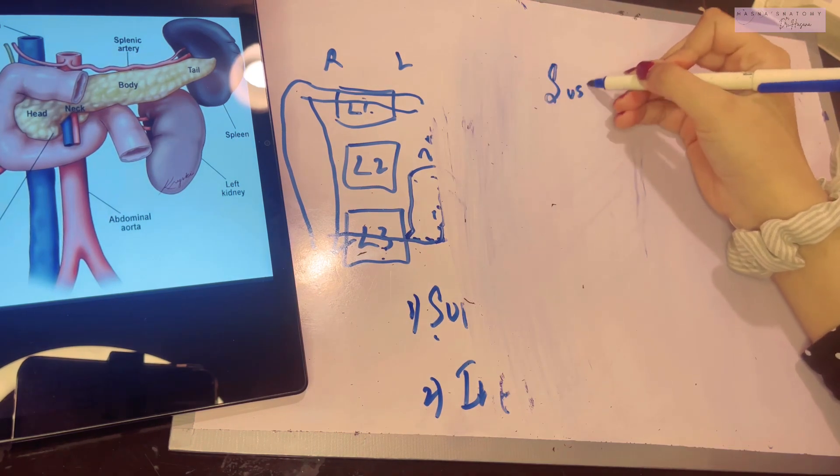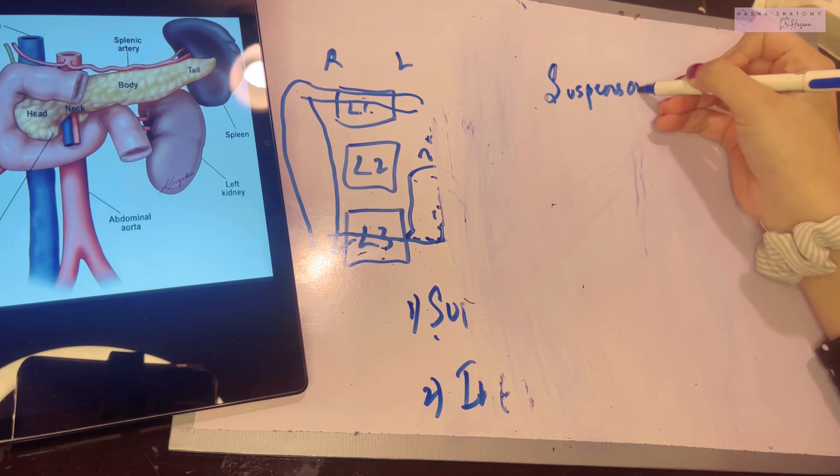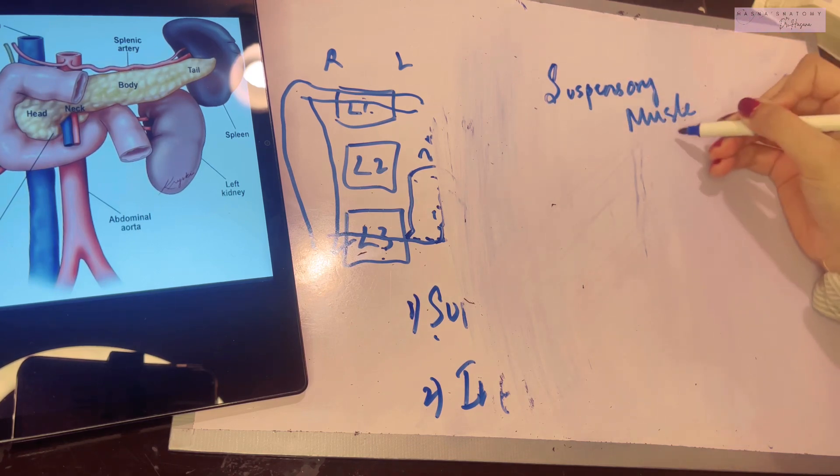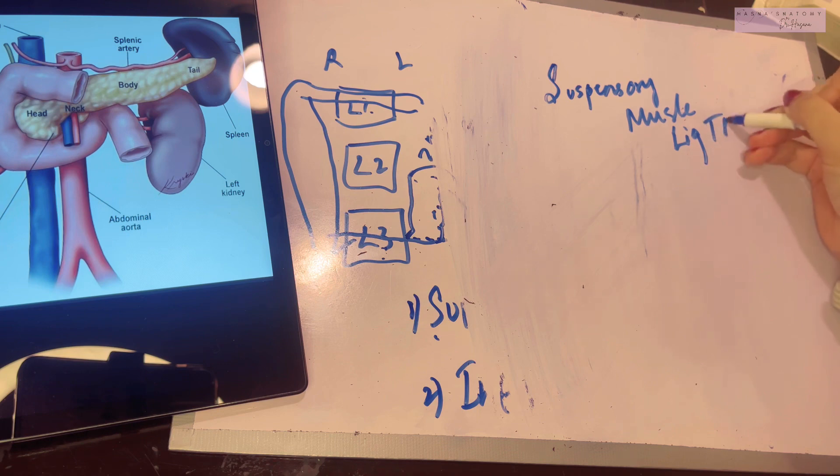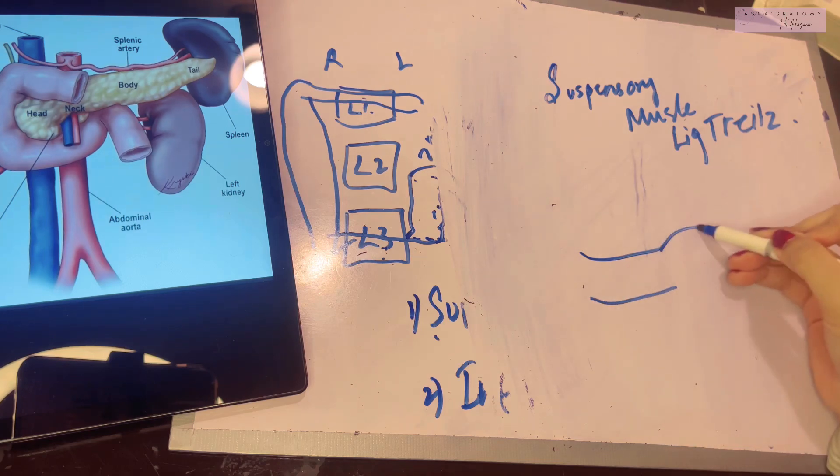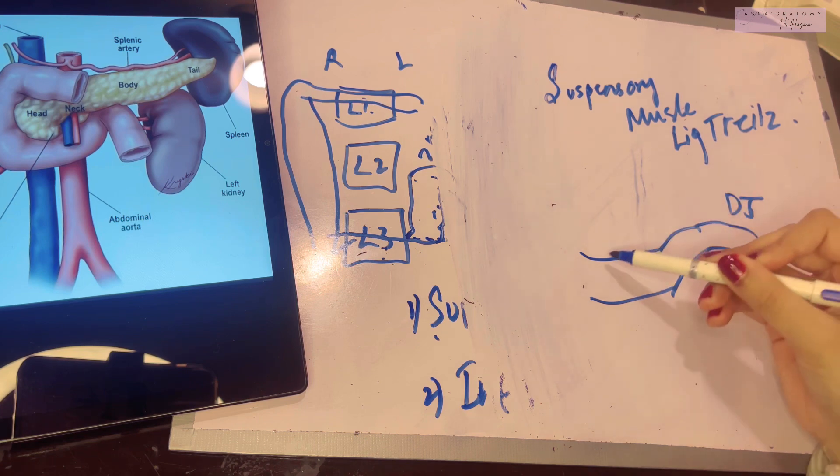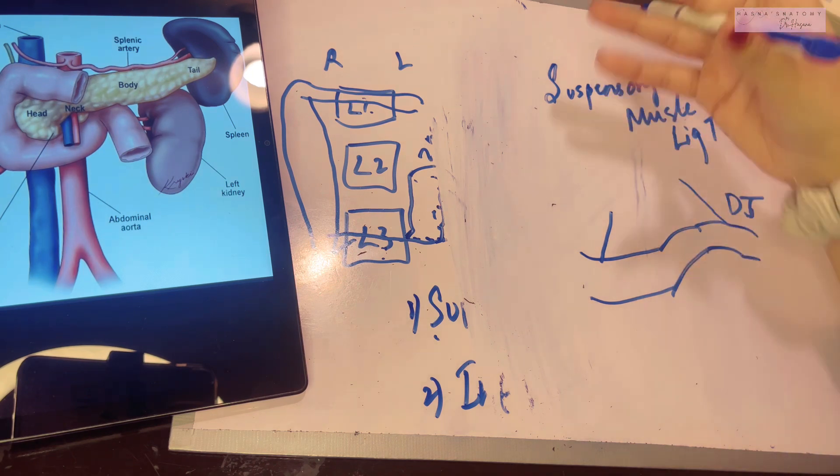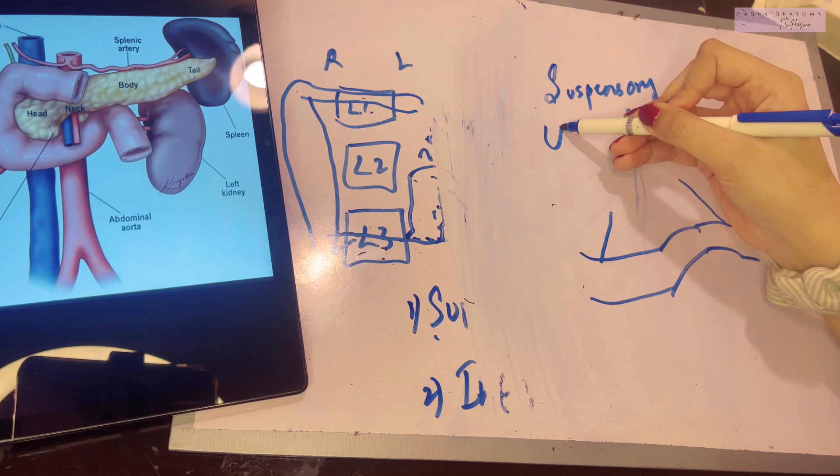Now let's talk about the suspensory muscle of the duodenum, or ligament of Treitz, T-R-E-I-T-Z. Basically what happens is, your third part of the duodenum, your fourth part of the duodenum, and the duodenojejunal flexure, all three of these have a band, a fibromuscular band attached to them. Where does this band come from? This fibromuscular band arises from the diaphragm, the right crus of the diaphragm.